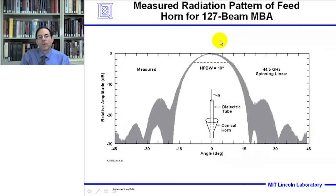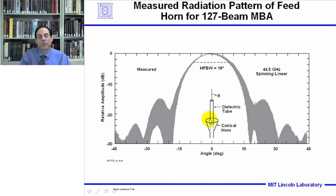Here's a measured radiation pattern of one of the feed horns for the 127-beam MBA. The half-power beamwidth of one of the feeds is 18 degrees. These data are measured using a spinning linear source. It's a conical horn with a dielectric tube inserted to produce the desired 18-degree half-power beamwidth. These measurements were done at 44.5 GHz.